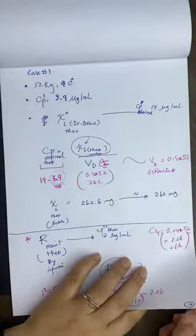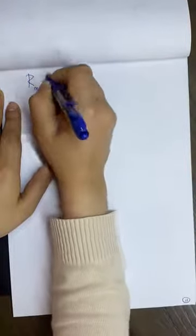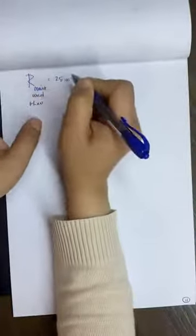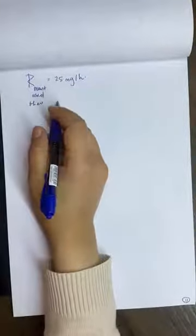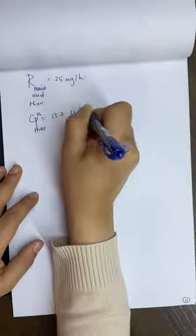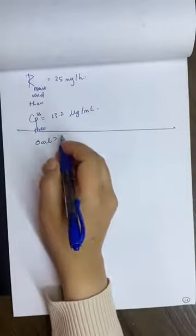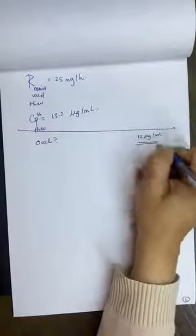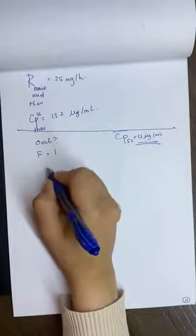Last one: The patient was stabilized on 25 mg per hour IV theophylline and the measured concentration was 13.2 microgram per milliliter. Calculate the dose of oral sustained release theophylline to maintain serum concentration of 12 microgram per milliliter. F for oral equals 1 and the desired dosing interval is 12 hours.